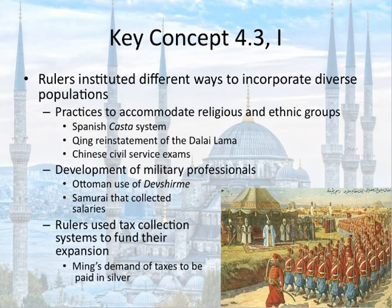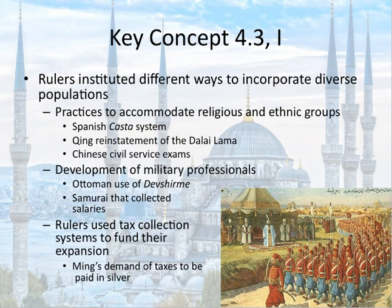Rulers also instituted different ways to incorporate diverse populations, putting into practice several ways to accommodate religious and ethnic groups. For example, as discussed in Key Concept 4.2, the Spanish casta system. The Qing reinstated the Dalai Lama in the western part of China and Tibet, who oversaw a particular type of Buddhism — there's an element of toleration there. You also see the Chinese use of civil service exams, which allowed religious and ethnic groups that aren't traditionally Chinese a chance to become part of the bureaucracy. Emperors also developed military professionals: the Ottomans used Christian boys to become janissaries through their Devshirme program, and samurai collected salaries from the daimyo and the shogun in Japan.